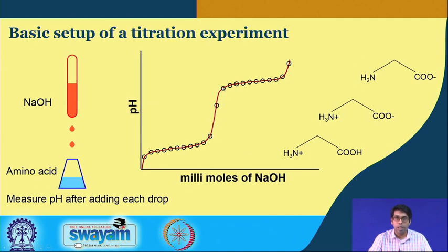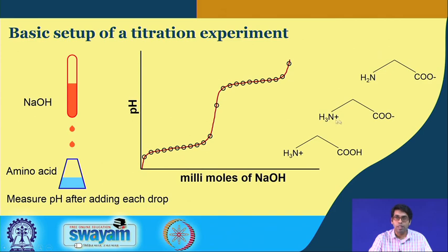Then the pH suddenly jumps and again we have another straight line where this second group is getting titrated — it is losing its proton so the amino group now becomes neutral. For this transition we get this straight line, and if I take the midpoint the corresponding pH will be the pKa for this transition. So one pKa will be here, another pKa will be here, and my pI will be somewhere in between — the midpoint of this transition. At that pH the species will be mostly in a form with a single positive charge and a single negative charge, giving you a neutral species. That will be the pI for glycine.